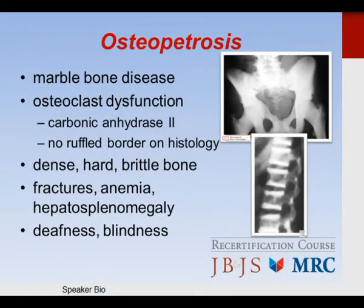Osteopetrosis is osteoclast dysfunction caused by dysfunctional carbonic anhydrase, resulting in dense, hard, and brittle bone. These patients have fractures, anemia, and hepatosplenomegaly. They can also have deafness and blindness because bone impinges on nerves. There is no ruffled border on histology in this condition.